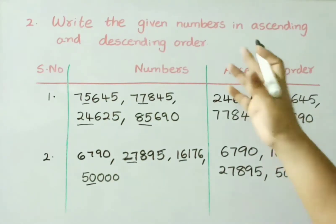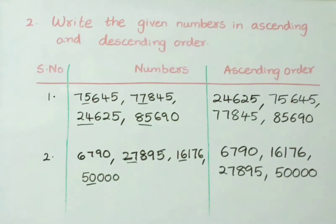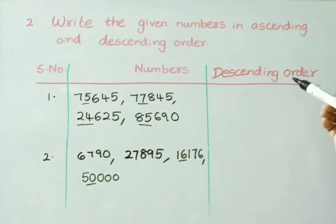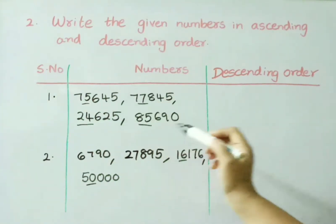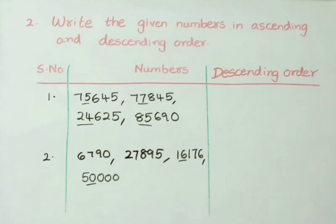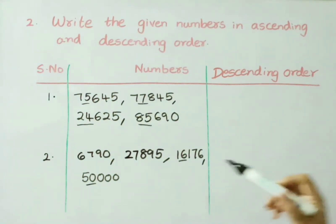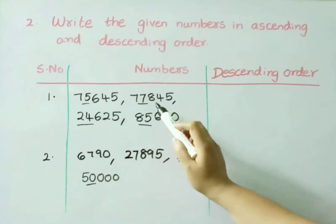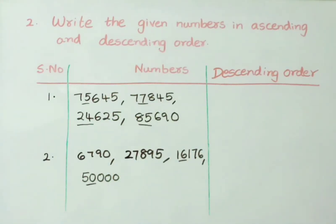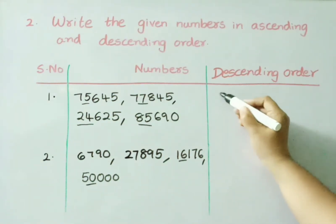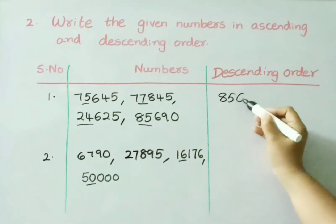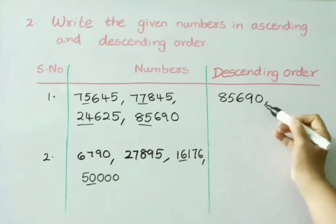Let us see the same numbers in descending order. Descending order means arrangement of numbers from greatest to smallest. Among the 4 numbers, which one is greatest? Here, all 4 numbers are 5-digit numbers: 75,000; 77,000; 24,000 and 85,000. Among all, which is the greatest value? 85,000 value. So, write 85,690.